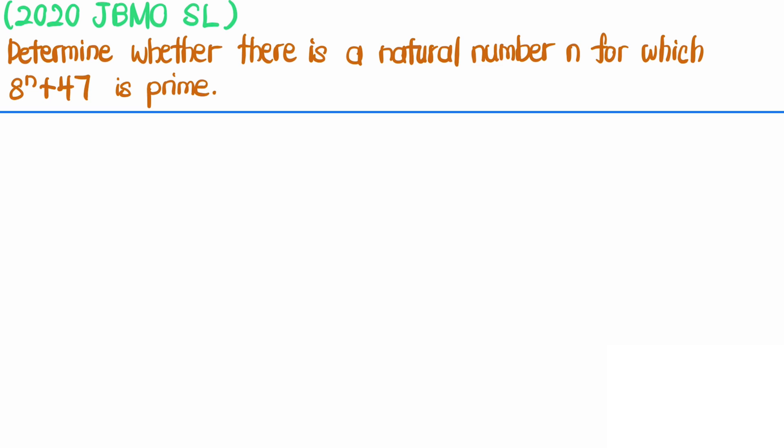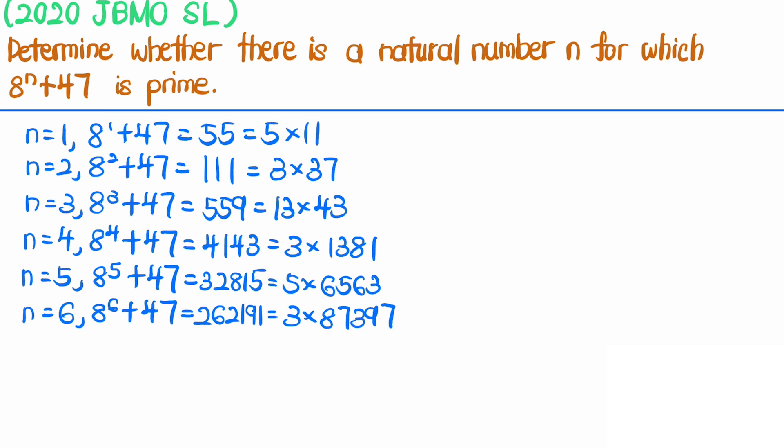I list the cases from n equals 1 up to n equals 6. When n equals 1, 8^1 + 47 = 55 = 5 × 11, not prime. For n equals 2, 111 = 3 × 37, also not prime. For n equals 3, 559 = 13 × 43. Similarly, for n equals 4 through 6, the numbers are also not prime.